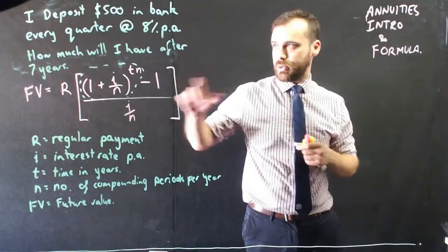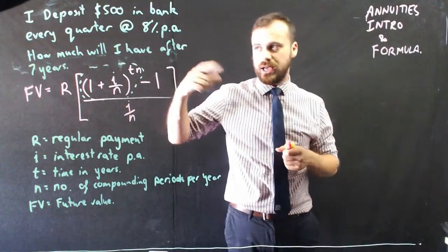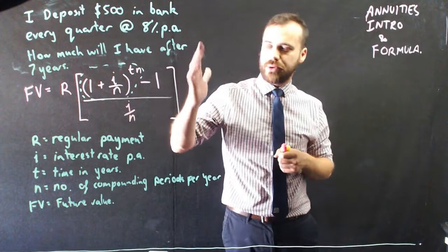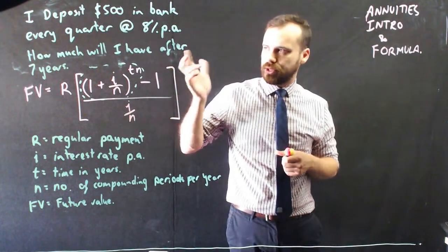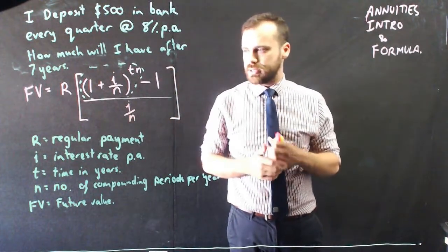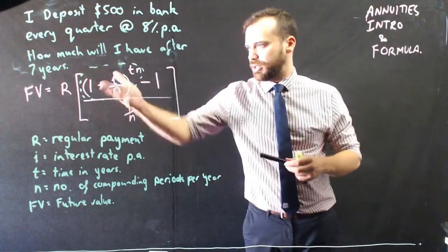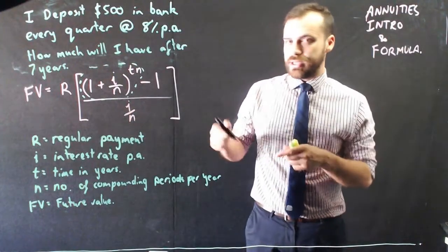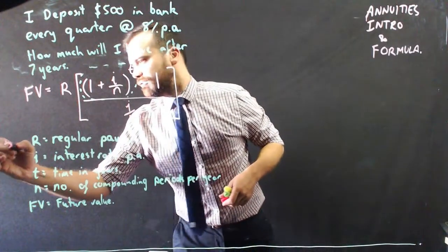All right, so here's our question. I deposit $500 in the bank every quarter at 8% per annum. How much will I have after 7 years? So looking at our formula here, the regular payment is $500.